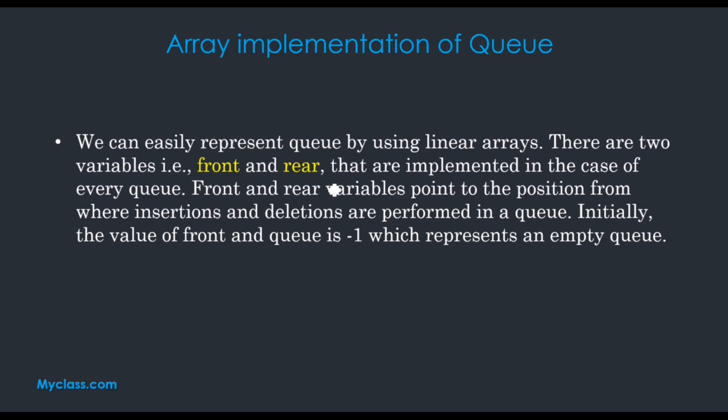There are two variables: front and rear. Front is pointing to the deletion position and rear is pointing to the insertion position. So we can delete an element from the queue only from the front side, and we can insert elements into the queue from the rear side only. Initially the value of front is equal to minus 1. If the front value is minus 1, then we can say that our queue is empty.